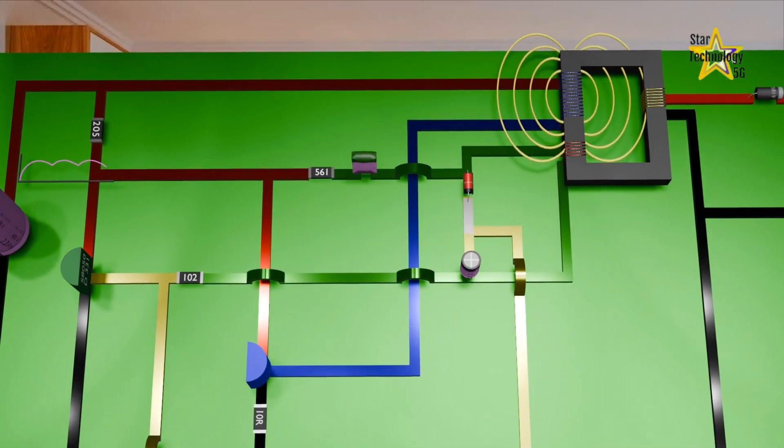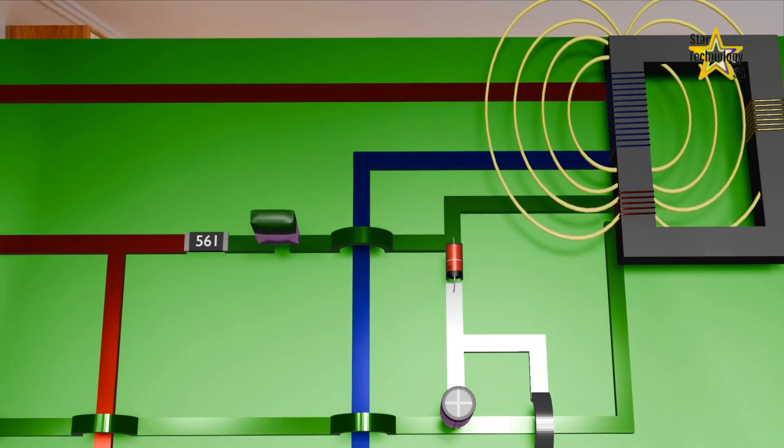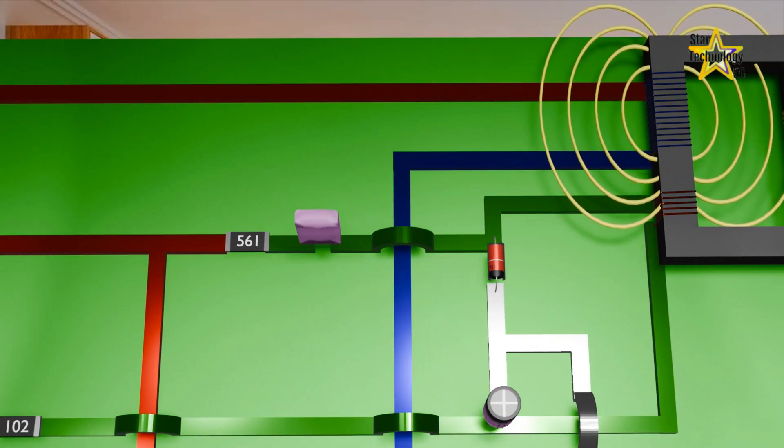This induces a low voltage in the auxiliary winding. The induced voltage now charges the capacitor and then the capacitor fully turns on the transistor.